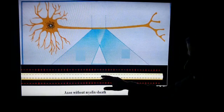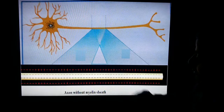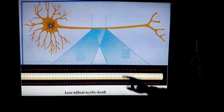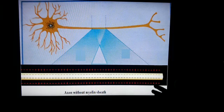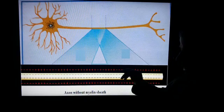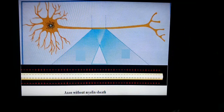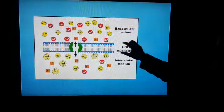Inside the axon we have a negative charge while outside, the zone in black, is positively charged. Why is it positively charged outside and why is it negatively charged inside?